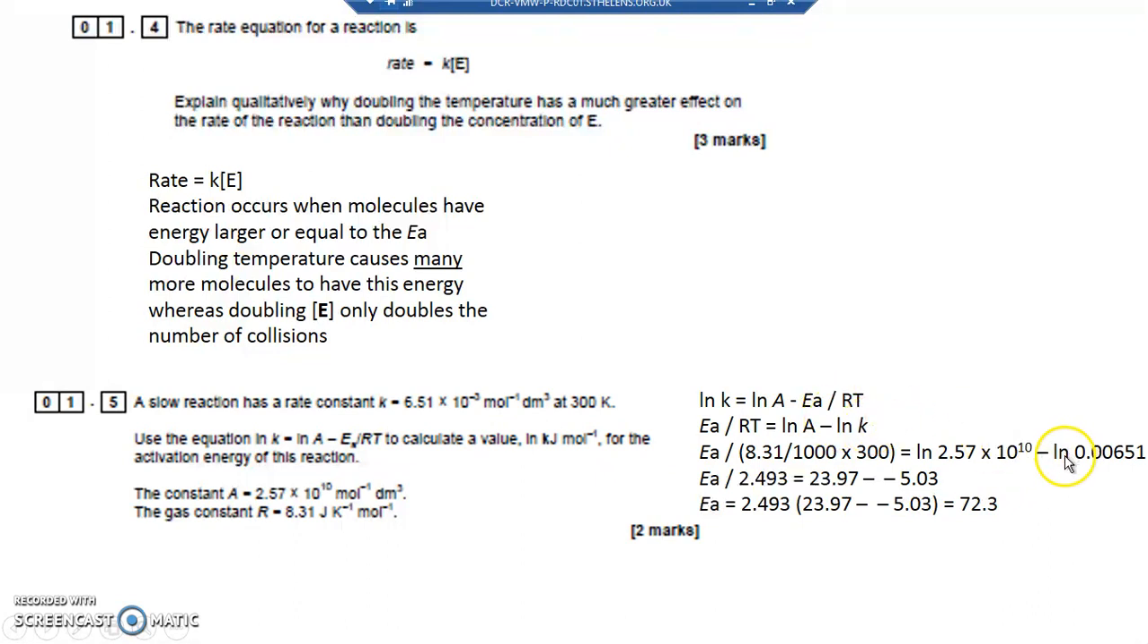ln of 0.00651. So I've just got these values from the question. And therefore I've got activation energy - I've multiplied these numbers out, work these numbers out - is 2.493 equals - this works out as 23.97 takeaway this one's a negative number minus 5.03. Two negatives by the way are equal to a plus.